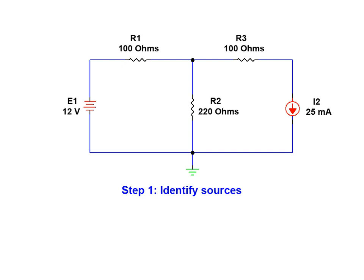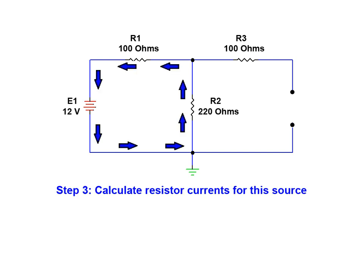Beginning with step one we identify a single voltage source and a single current source present in this network. We will begin by calculating resistor currents resulting from the single voltage source. In the second step of the process the current source is removed and replaced with an open circuit. We now move on to calculate the resistor currents based on this single source's presence in the circuit.